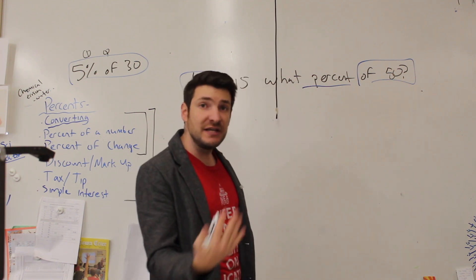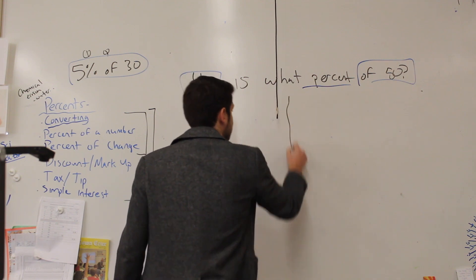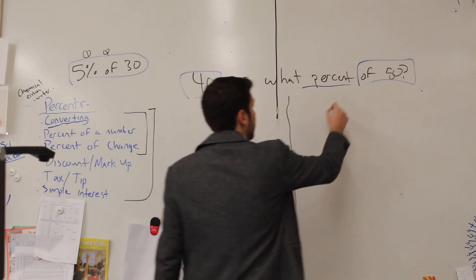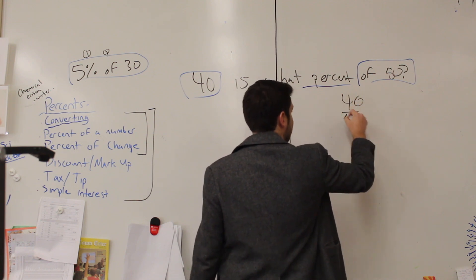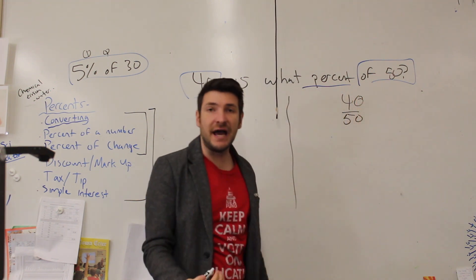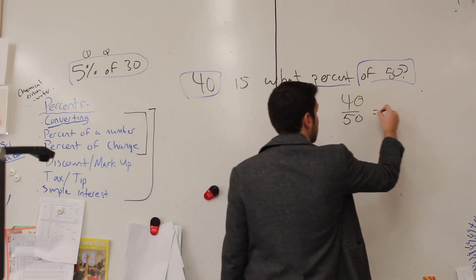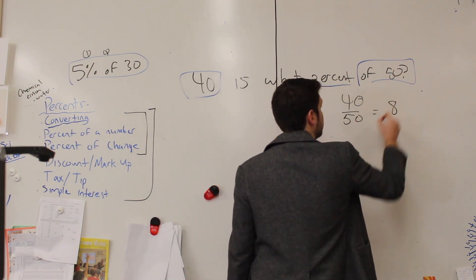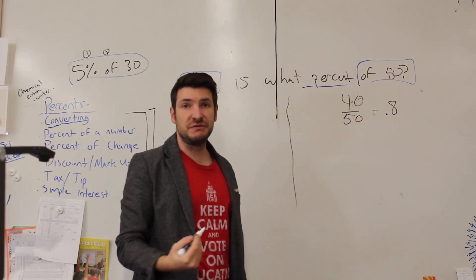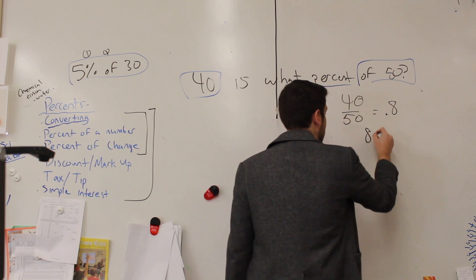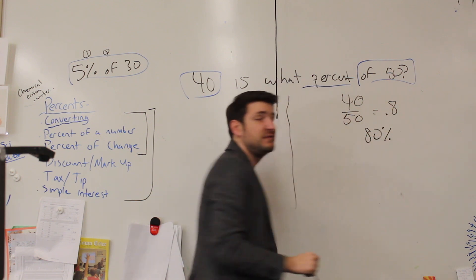Well there are two ways we can actually set this up. First way we can set this up is we can say 40 out of 50 and we can do the math, divide, we can find out the answer. Just a hint, the answer is gonna be 0.8. Change 0.8 into a percent, you're gonna end up with 80 percent. Move that decimal over twice.